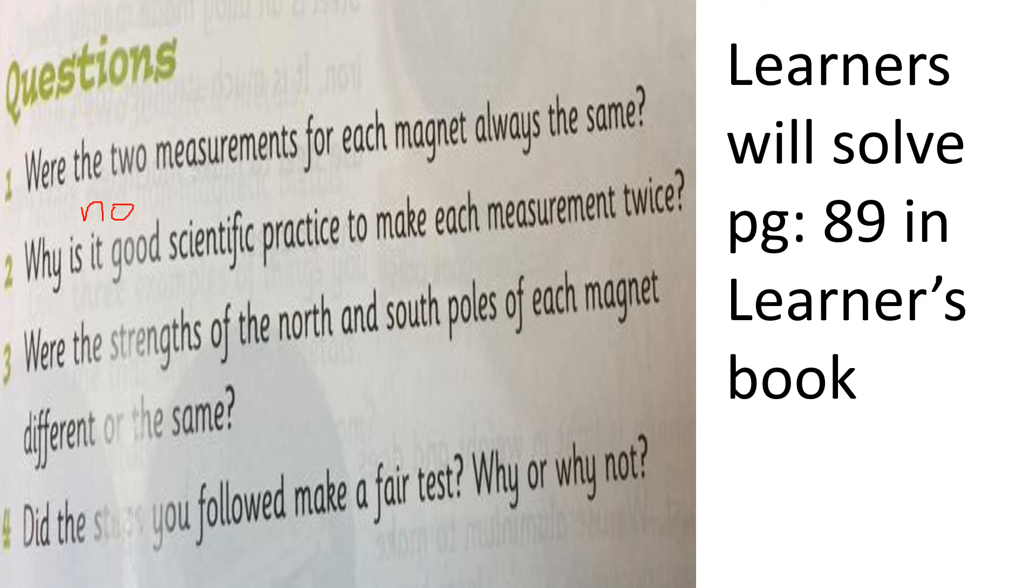Now, why is it good scientific practice to make each measurement twice? To get mean reading, or average reading. Otherwise we are not getting the mean or the average reading. Were the strength of the north and the south pole of each magnet different or the same? They are always be same because the magnet have maximum strength in their poles. Either it's south or either it's north. Did the steps you followed make a fair test? Why or why not? Yes. It makes a fair test. Why? Because we are putting all the things same. That's why it's good. We are putting all the things same.